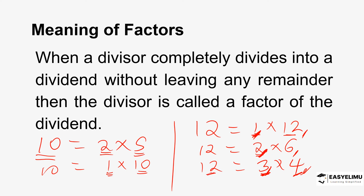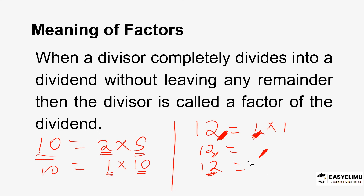So 12 equals 3 times 4 means 12 divided by 3 is 4, and 12 divided by 4 is 3. Similarly, 12 equals 2 times 6 means 12 divided by 2 is 6, and 12 divided by 6 is 2. And 12 divided by 1 is 12, while 12 divided by 12 is 1. That is how you arrive at all the factors that can completely divide into a dividend without leaving any remainder. We call them factors.